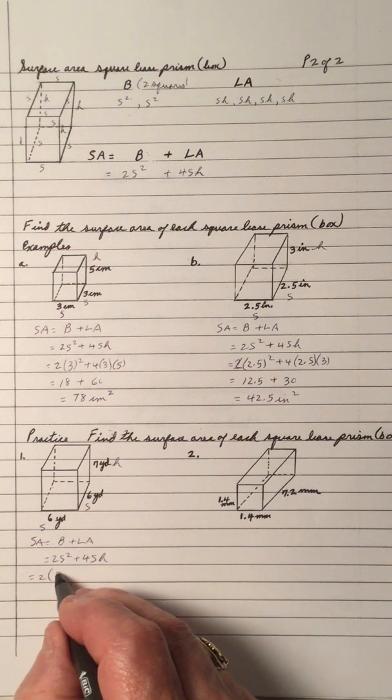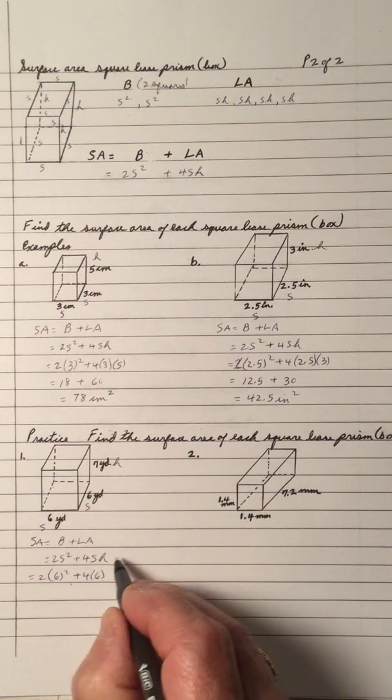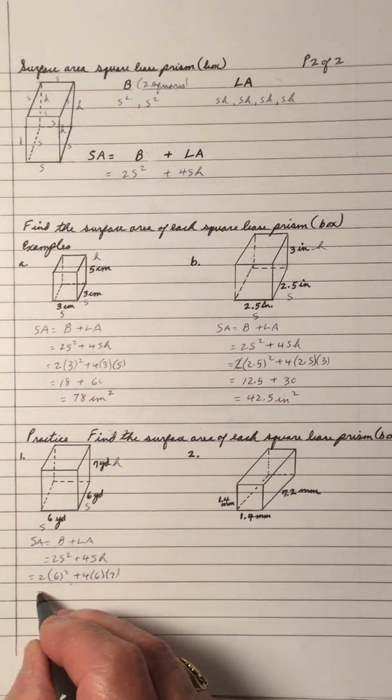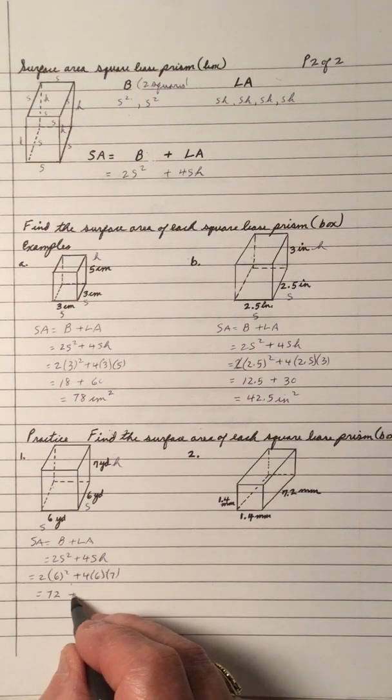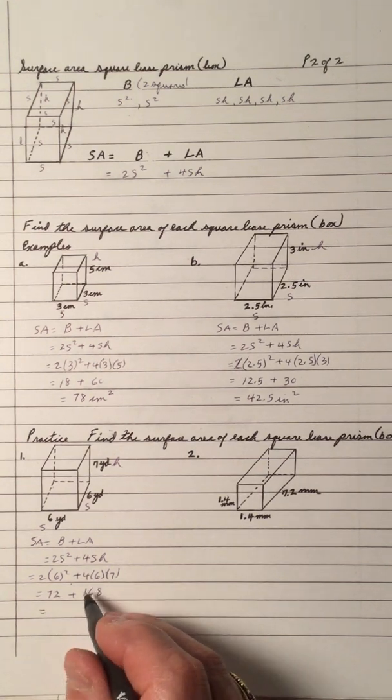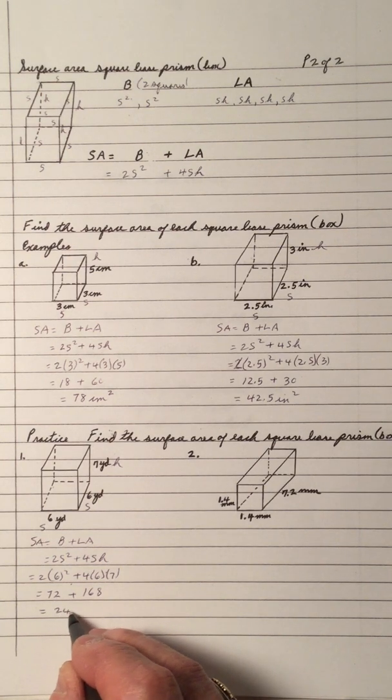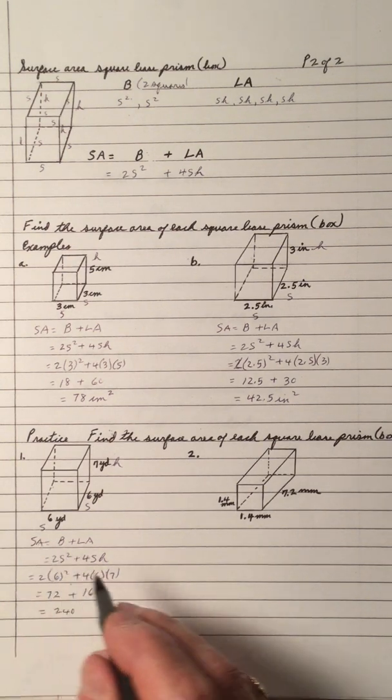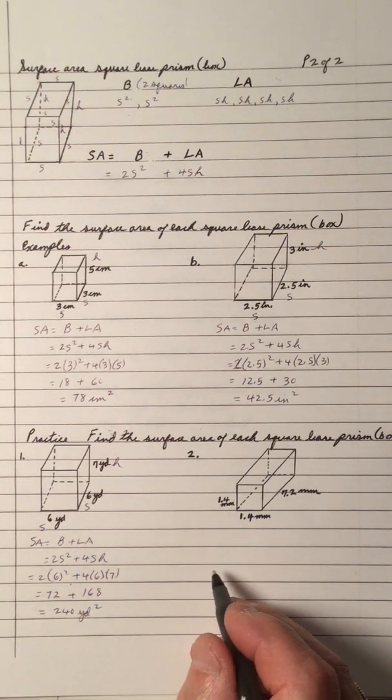And S is 6, so 6 squared. S is 6 and the height is 7. So 36 times 2 is 72, and 24 times 7, calculator or pen. And if you add 72 and 168 up, you get 240. And again, we're dealing with surface area, so it's square yards.